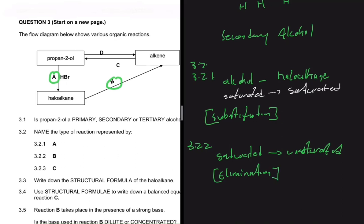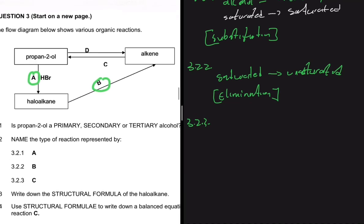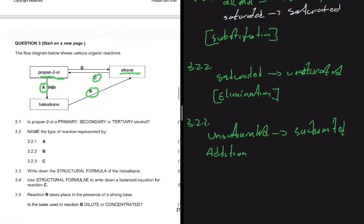And now let's do 3.2.3. Let's write down the type of reaction represented by C. So for reaction C, we're going from an alkene to an alcohol. So we have an unsaturated compound and we move into a saturated compound. And that reaction would be addition reaction. So 3.2.3, we have addition.